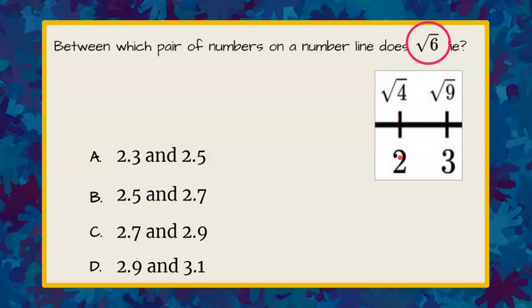We know that 2 on the number line can be represented by the square root of 4. The square root of 4 is a perfect square, which is equal to 2. The square root of 9 is a perfect square, and the square root of 9 is 3. So we know that the square root of 6 lies between the square root of 4 and the square root of 9 on this number line.